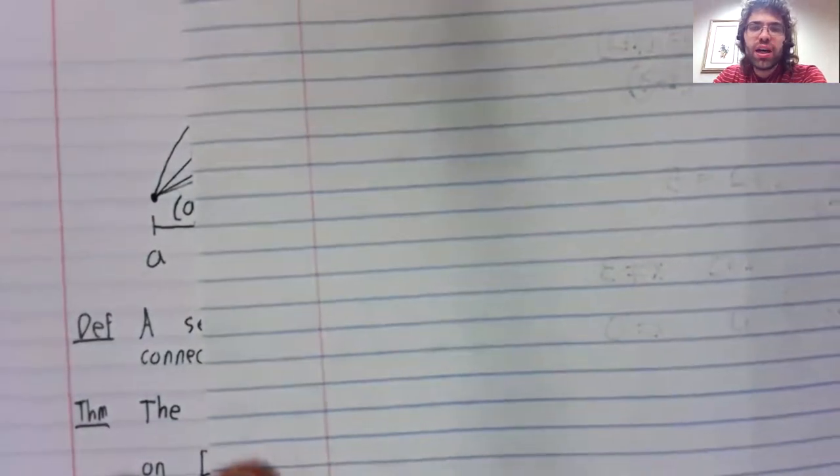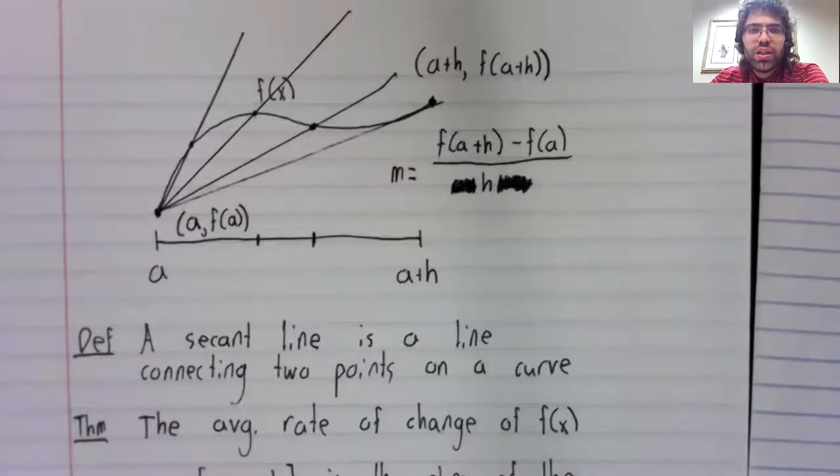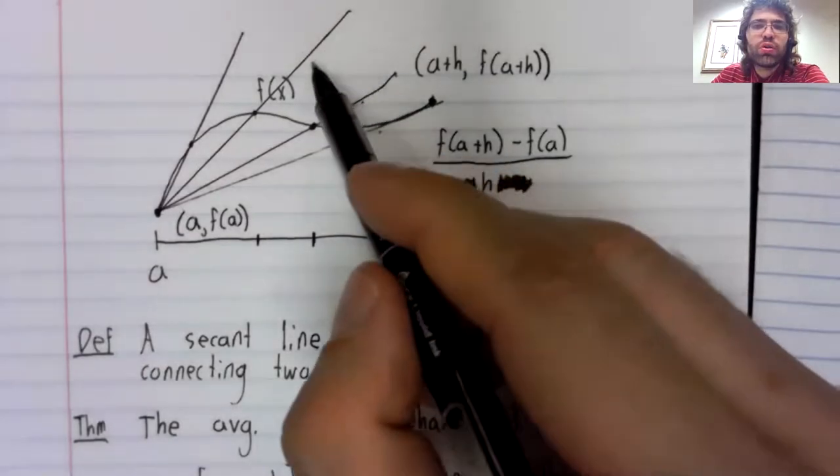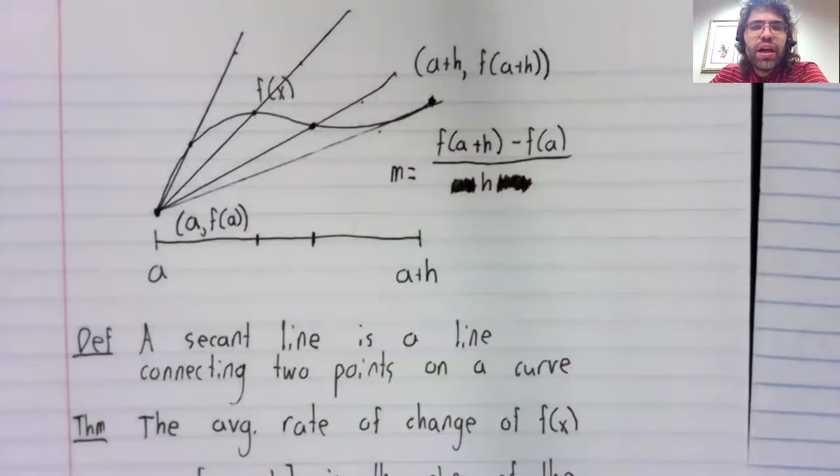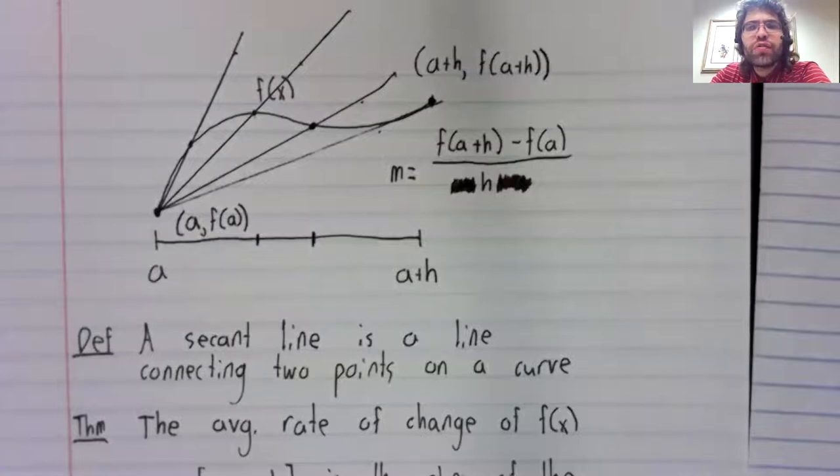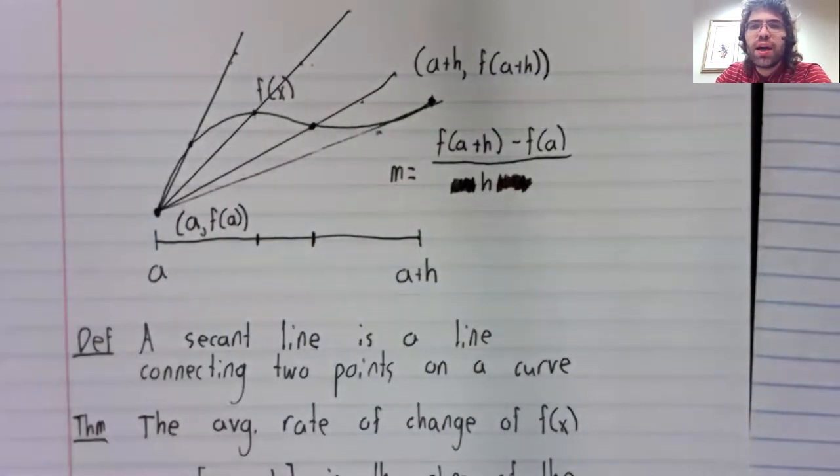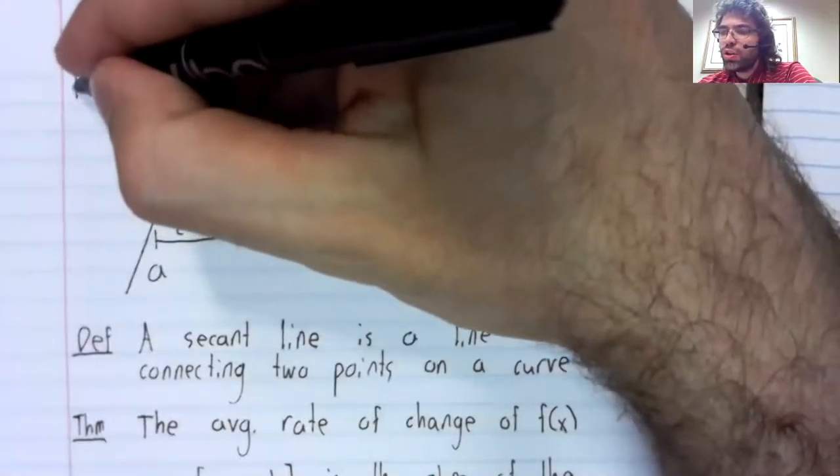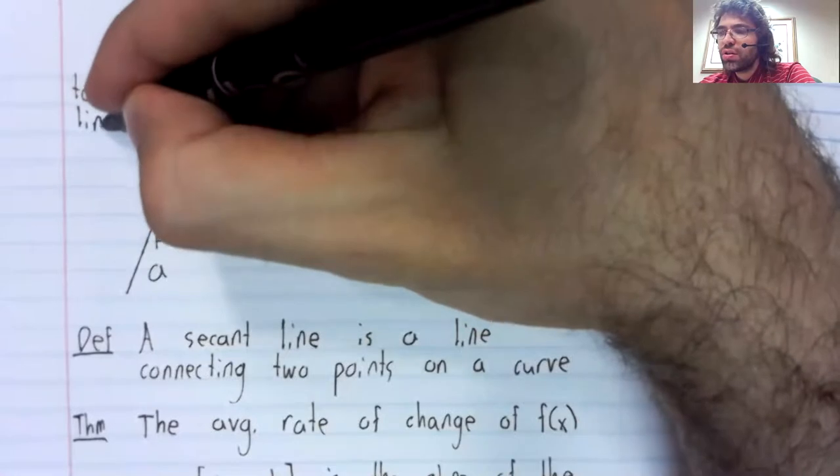These secant lines are also changing. You see, these secant lines correspond to smaller and smaller h values. And just like the average rate of change is approaching a number, these secant lines are approaching a line called the tangent line.